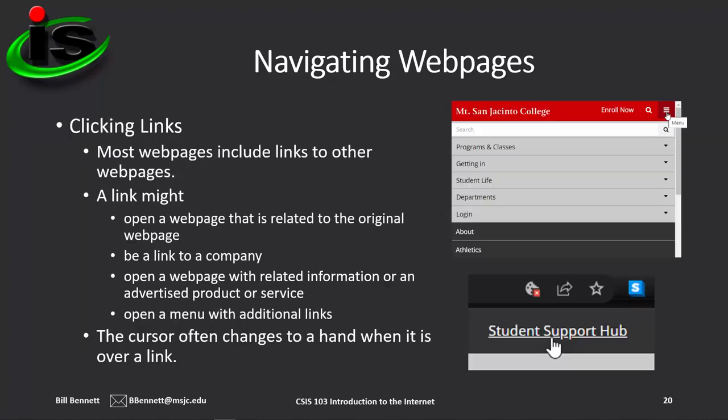Part of navigating web pages is clicking on hypertext links. Most web pages you'll view in your browser include links to other pages. A link might open a related web page, be a link to a company, open a page with related information or an advertised product, or even open a menu with additional links — as shown in this example using a hamburger menu. In the top right graphic, it's not hyperlinked text but a hamburger menu graphic; when you move your pointer over it, the pointer changes to a hand, indicating it's a hyperlink. Clicking it opens a list of options that are also hyperlinks.